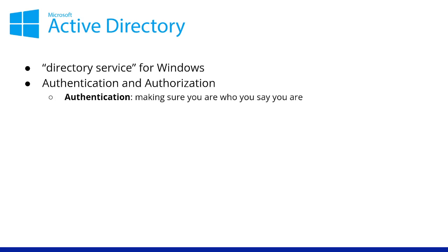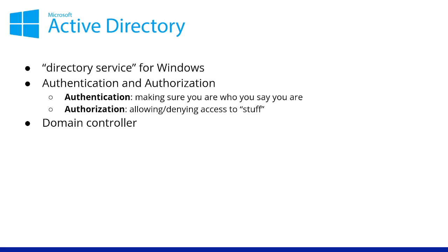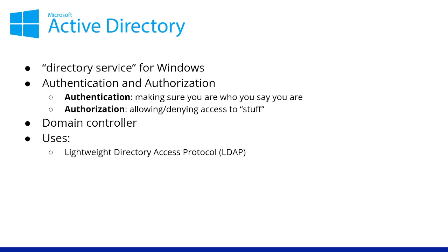Active Directory is a directory service for Windows. It controls a whole network of things — computers, objects like printers or scanners, users, programs, and processes. It has identifiers for all of these, sorts and organizes them, gives them permissions, and figures out who can do what and where. Primarily it's responsible for authentication — making sure you are who you say you are — and authorization, allowing or denying access. The main way it does this is with a server called a domain controller, which orchestrates and runs everything centrally.